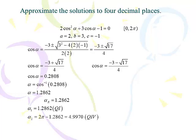Let's see how this plays out. Working the left side first: negative 3 plus √17 over 4. Cosine α equals this — it's really important that you write cosine α equals 0.2808. Since we don't know the angle, we use the inverse cosine function and get 1.2862. That's our reference angle — we want to be that many radians off the x-axis in quadrants 1 and 4, where cosine is positive. Our first answer is 1.2862, and our second is 2π minus 1.2862, which comes out to 4.9970. Two answers: one in quadrant 1, one in quadrant 4.